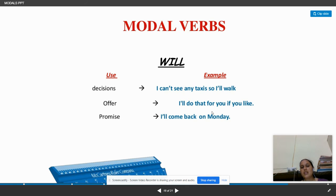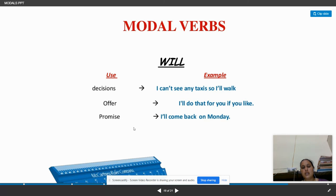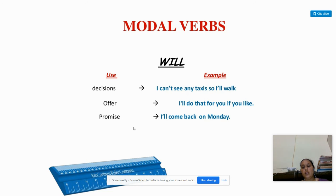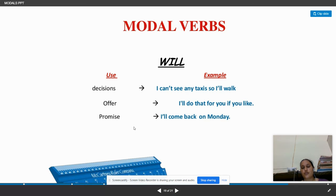So the main thing is that when we have 'I' and 'we' and we are using 'will', this means it is a decision, offer, or promise. In these situations we will use 'will' instead of 'shall'.